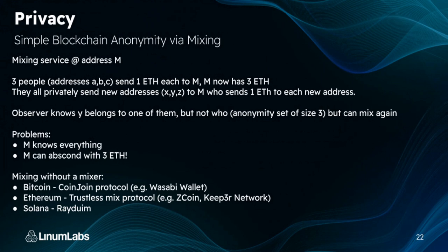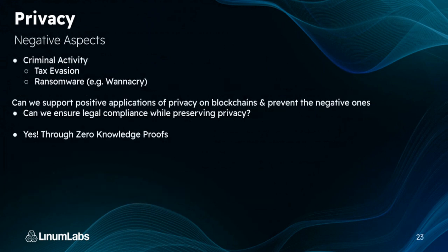You can mix without a mixer, so you don't have to trust that address. In Bitcoin, you can use the CoinJoin protocol and the Samourai wallet. On Ethereum, there are trustless mixing protocols like Zcoin and Keeper Network, and Tornado Cash — though that's sanctioned in many places now. On Solana, you can use Radium. You can also use the Aztec protocol, which is a zero knowledge blockchain where all transactions are private. There are negative aspects to privacy though — you can do criminal activity like tax evasion or ransomware. The goal is to support positive applications of privacy while preventing negative ones.